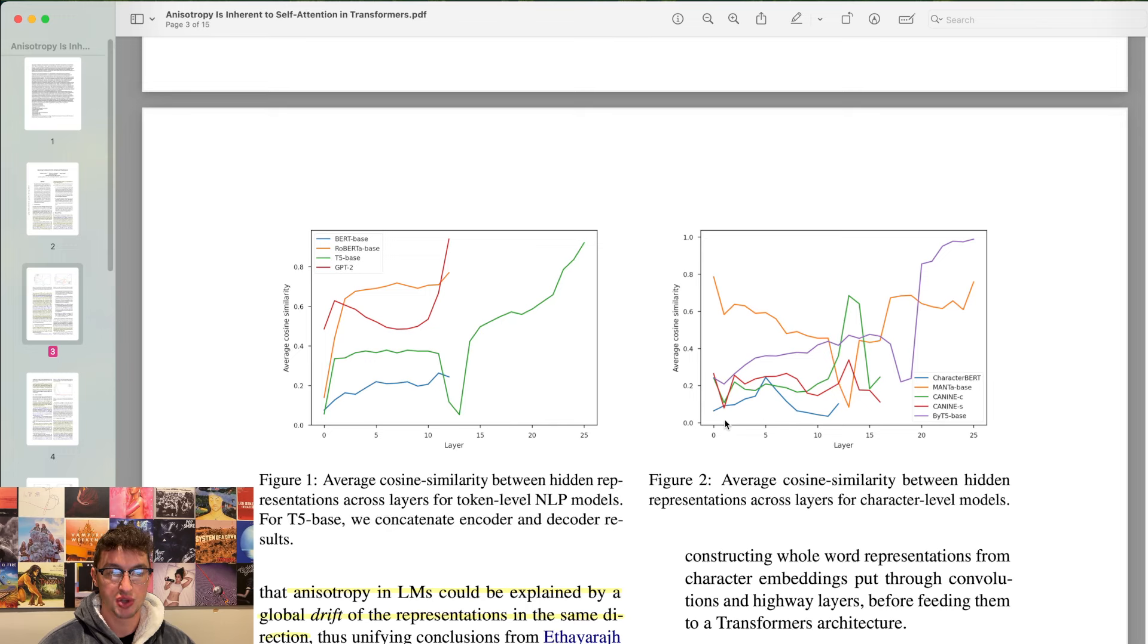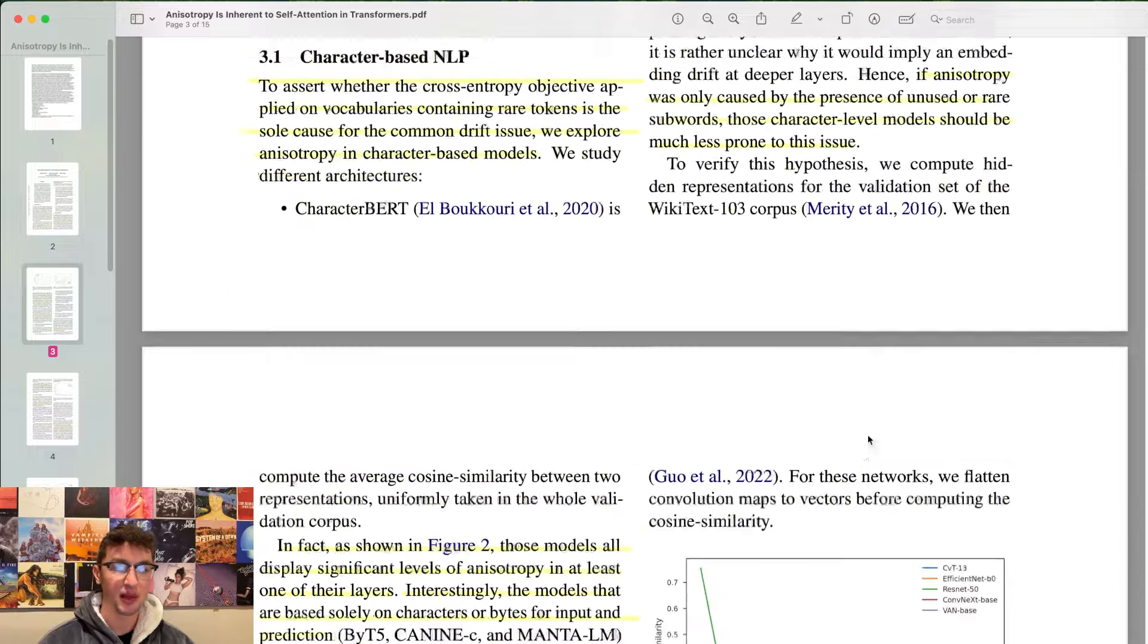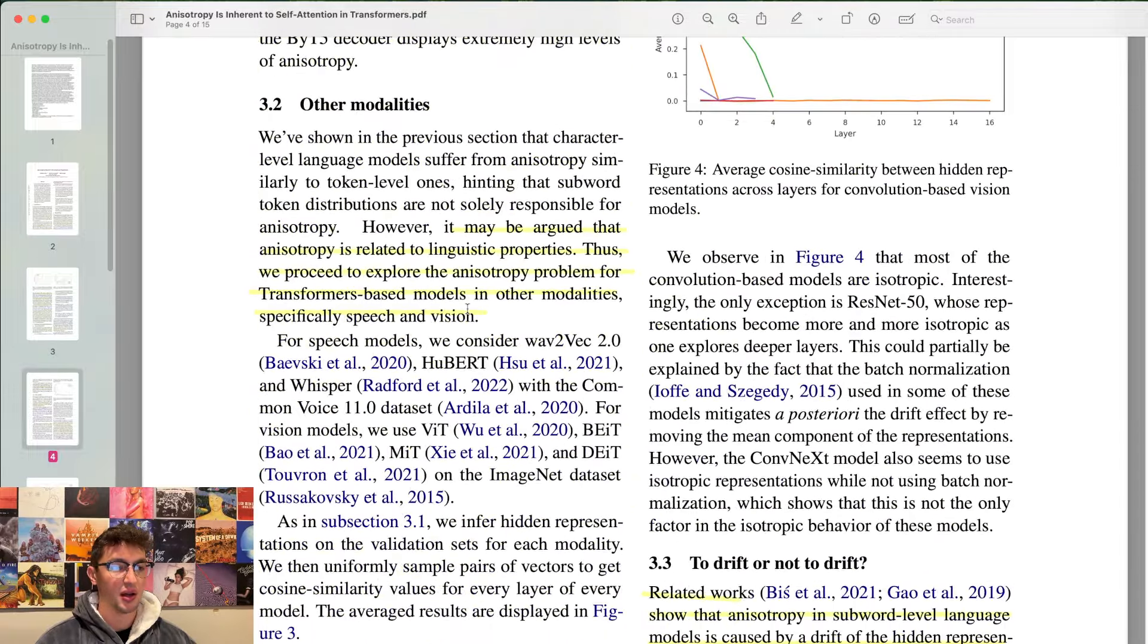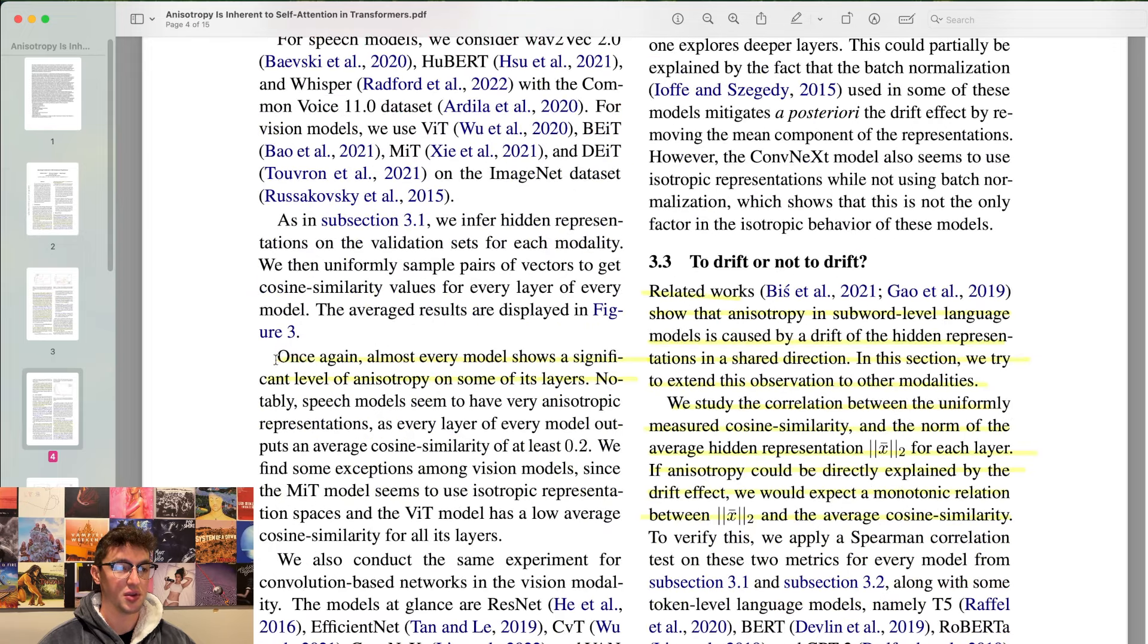So we can see here this y-axis is cosine similarity. You would expect isotropy, you'd have average to be 0. But only character BERT and K9S are somewhat close to 0. Everything really does exhibit some level away from 0. Even character BERT at layer 5 is greater than 0.2 average cosine similarity. Some of these models are much, much higher, even getting close to 1. Bytes 5 base at the last layer is really close to 1 cosine similarity, that's actually insane, how close it is.